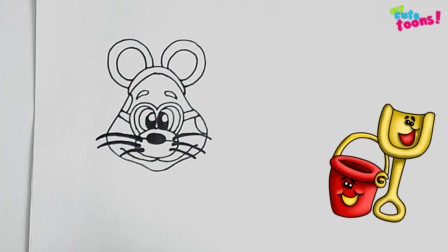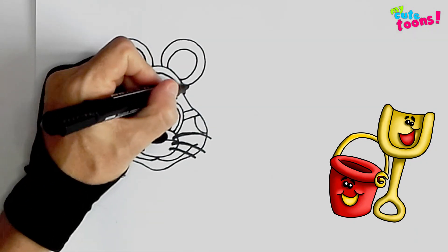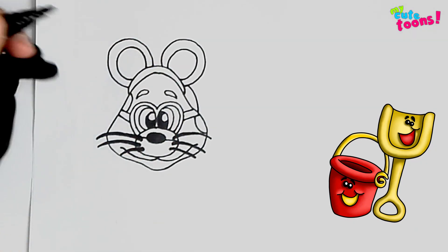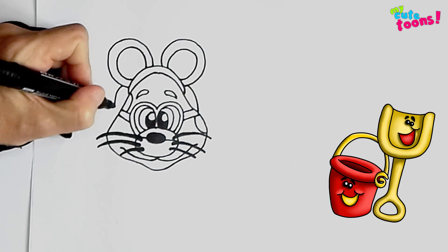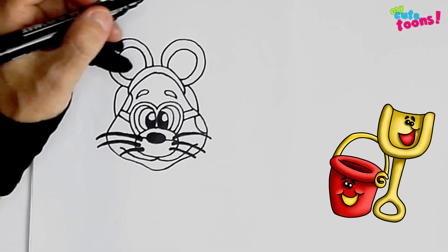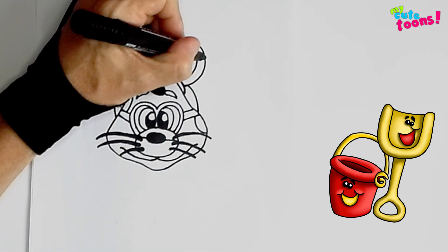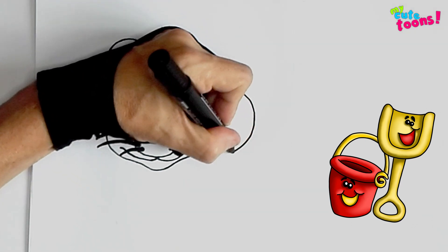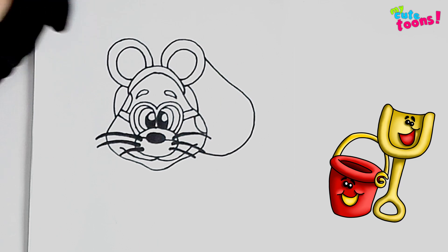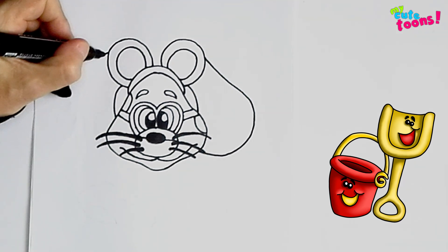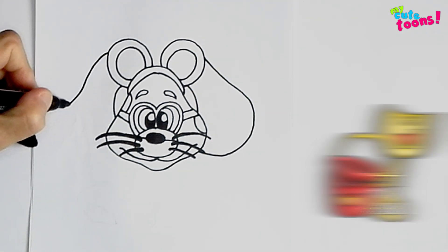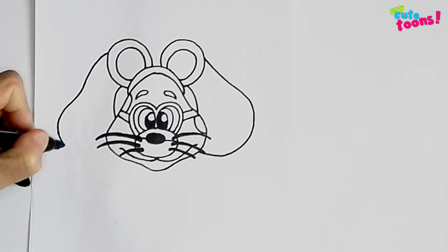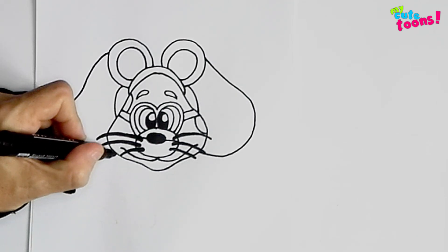And now we're going to draw Magenta's real ears going out. On top here I'm going to draw nice ears out.